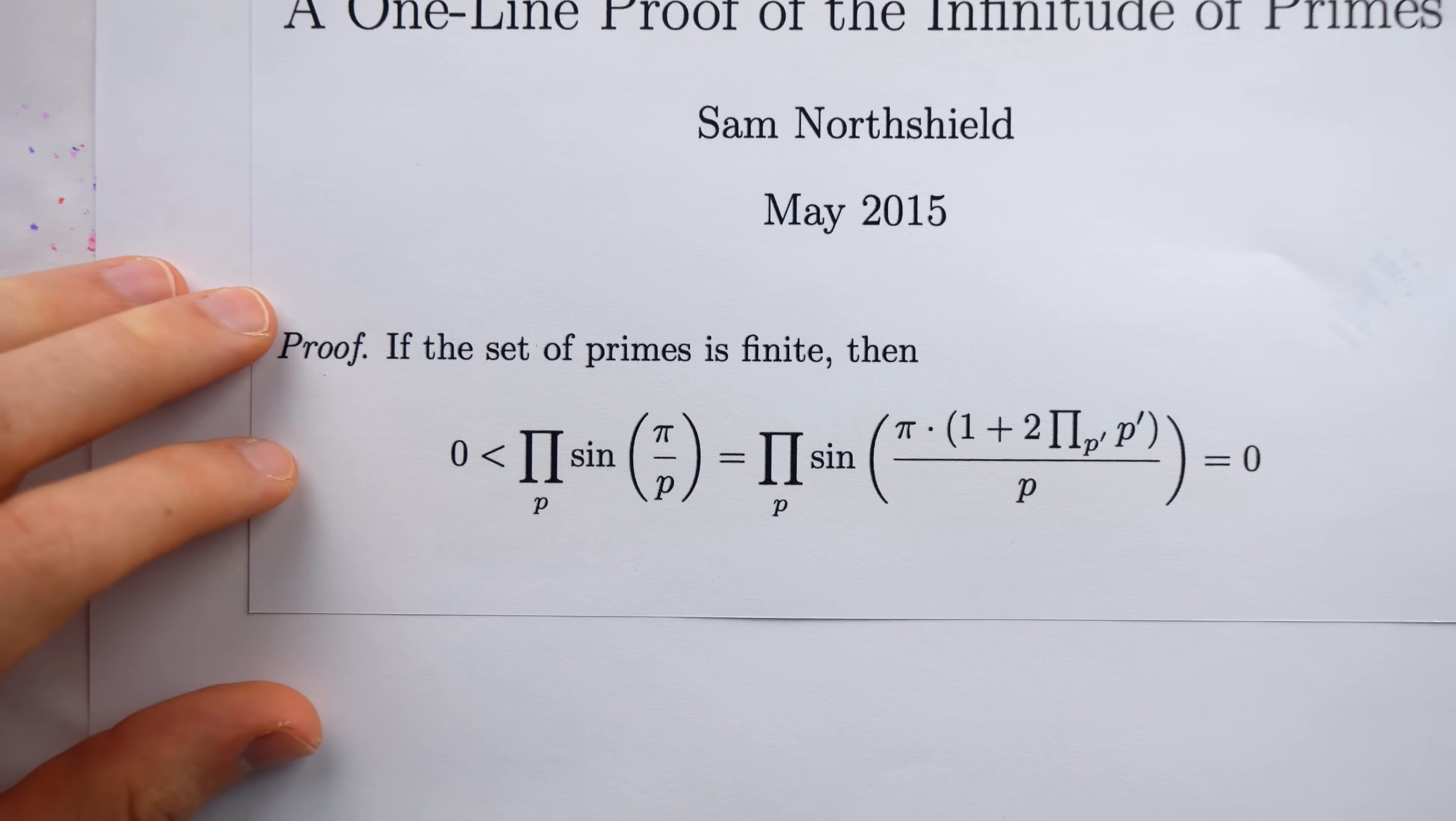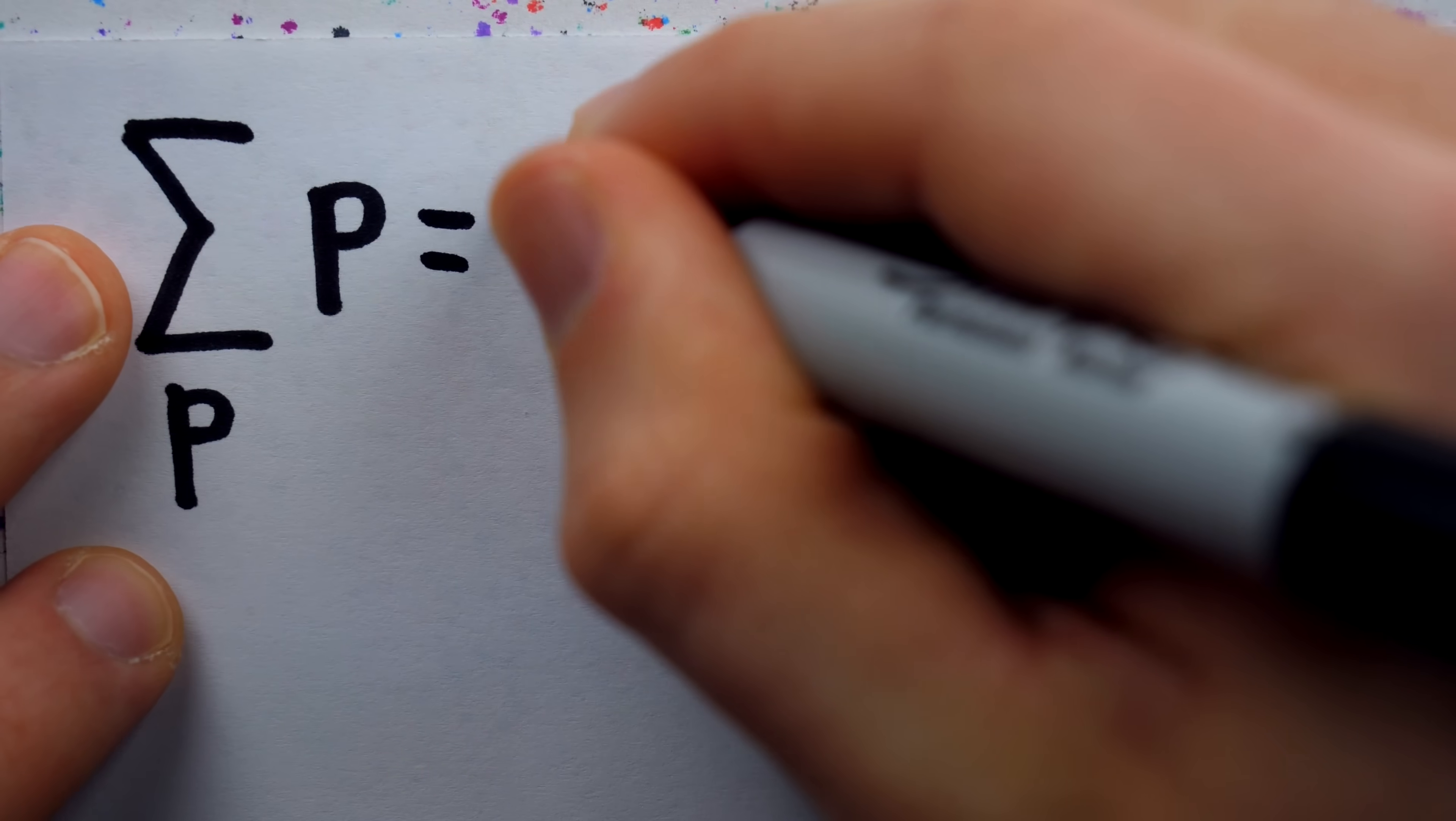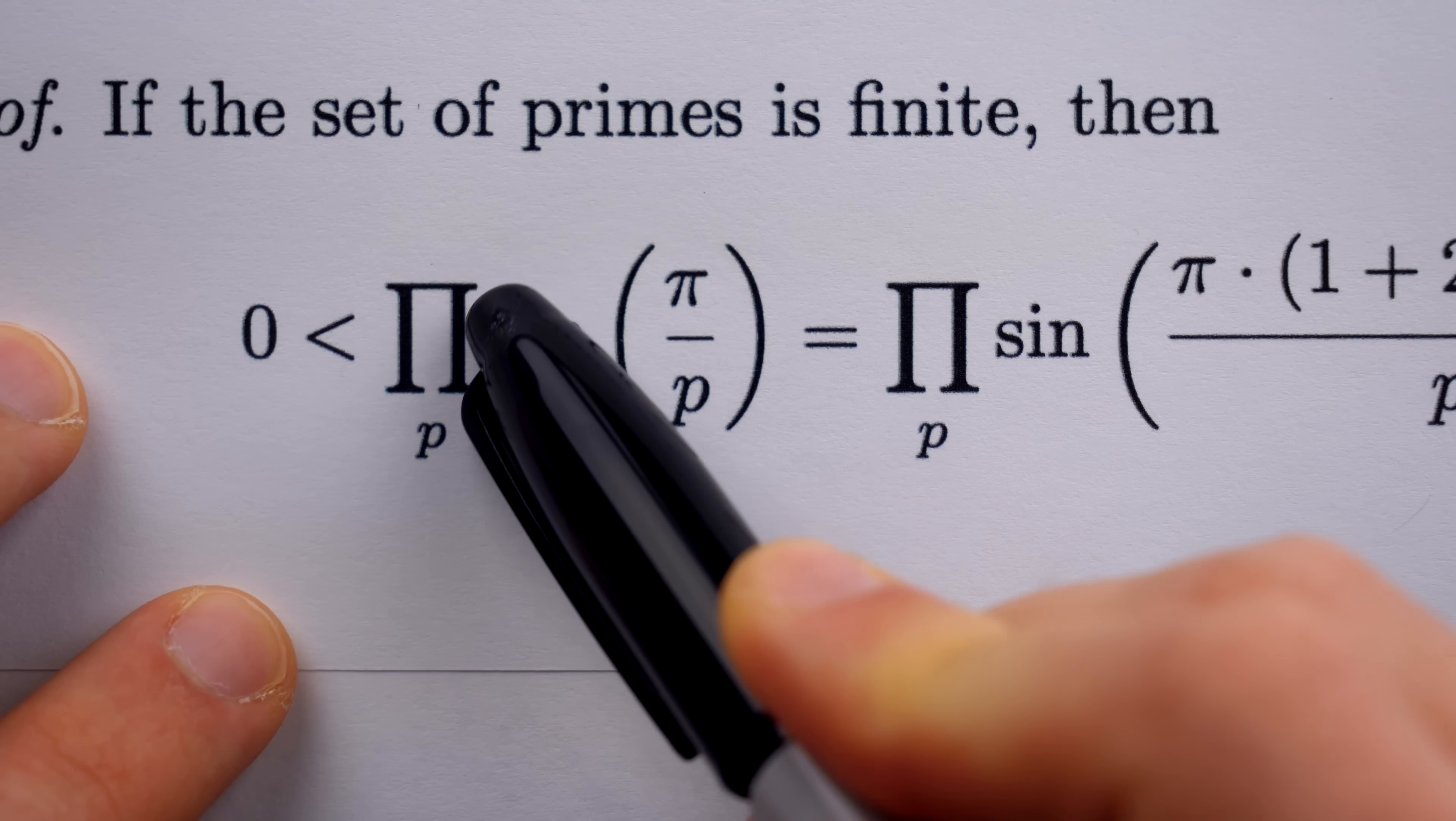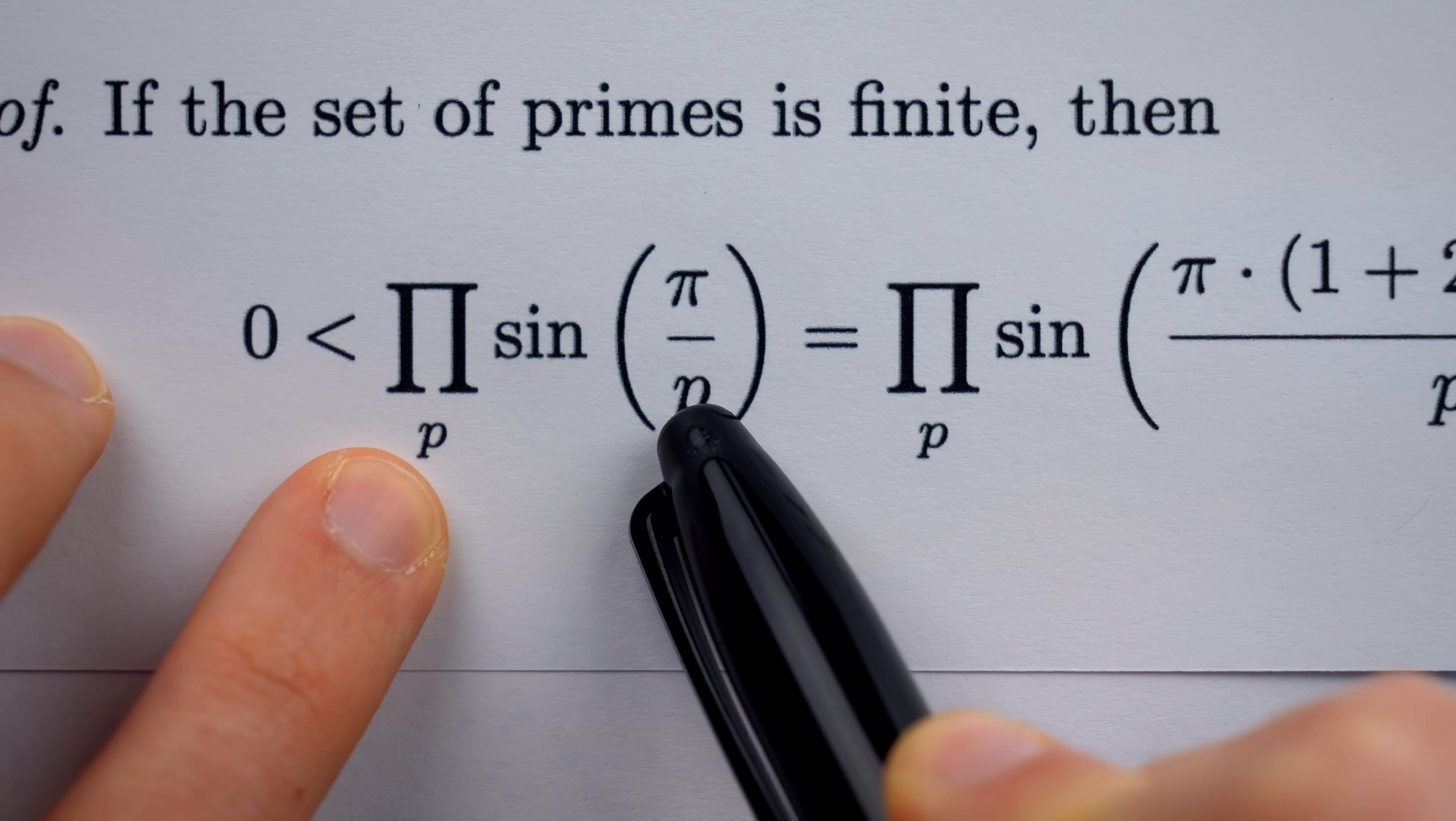These are uppercase pies. If you know how sigma is used in math, this is just sigma but for multiplication. It tells us to multiply by this expression over and over again for every value of the indexing variable.